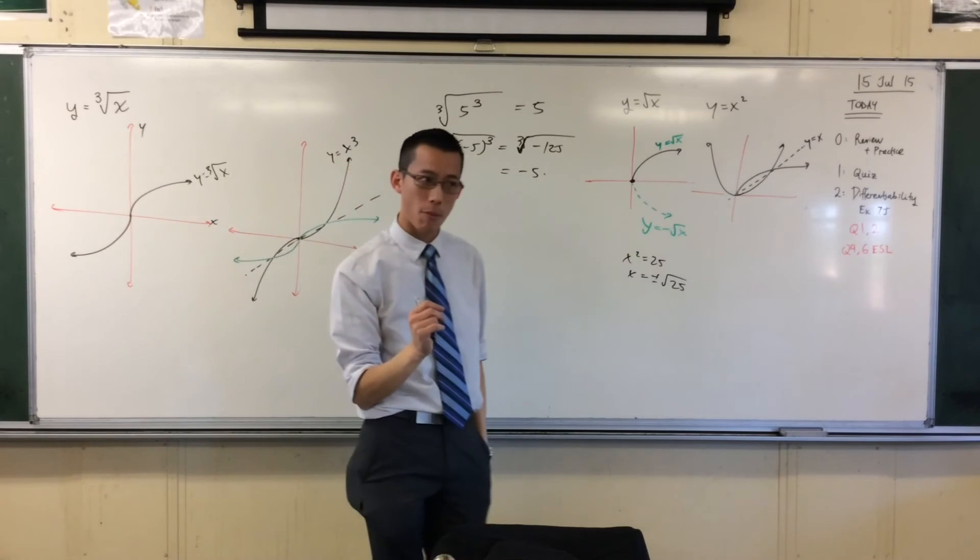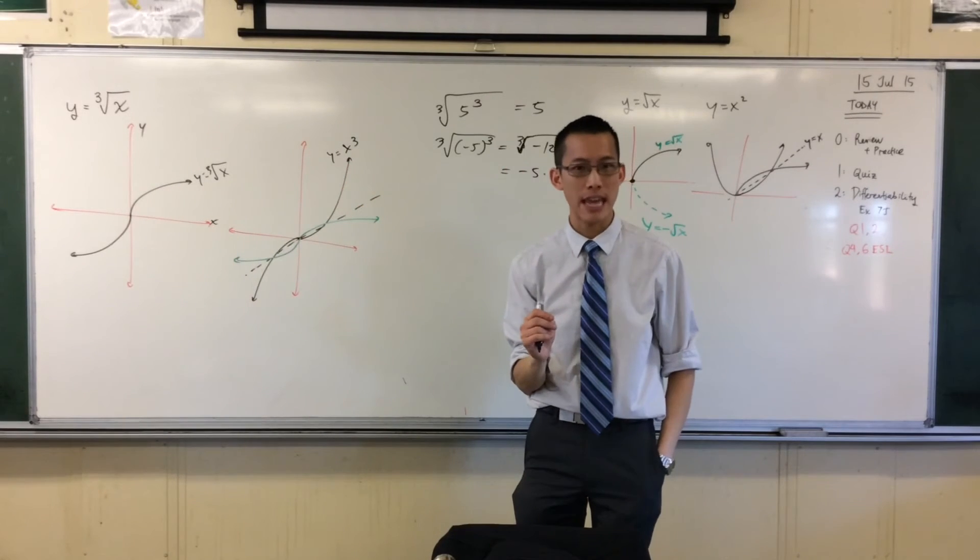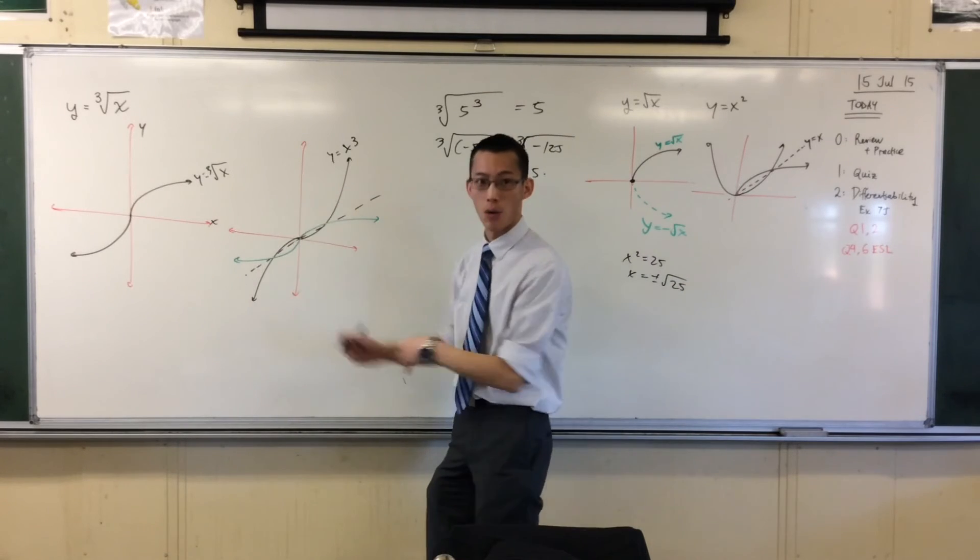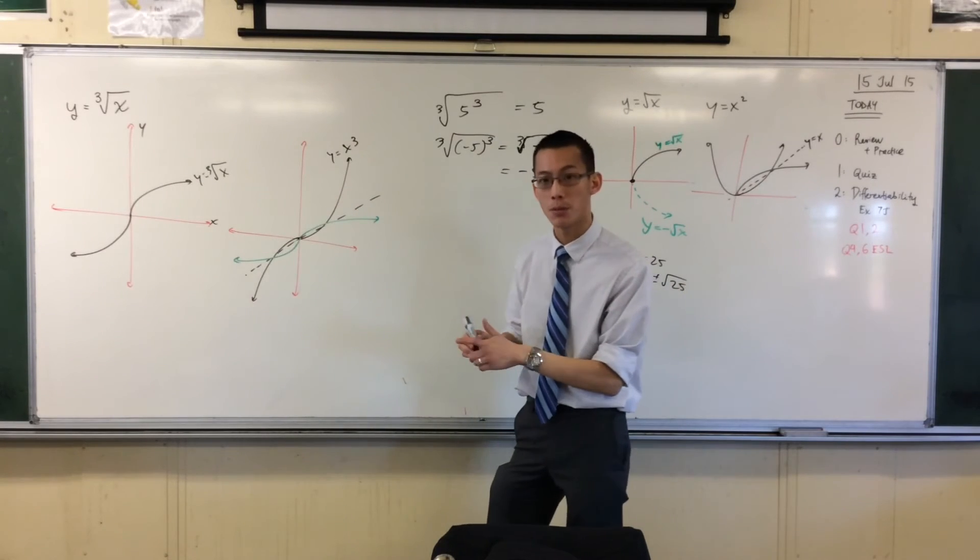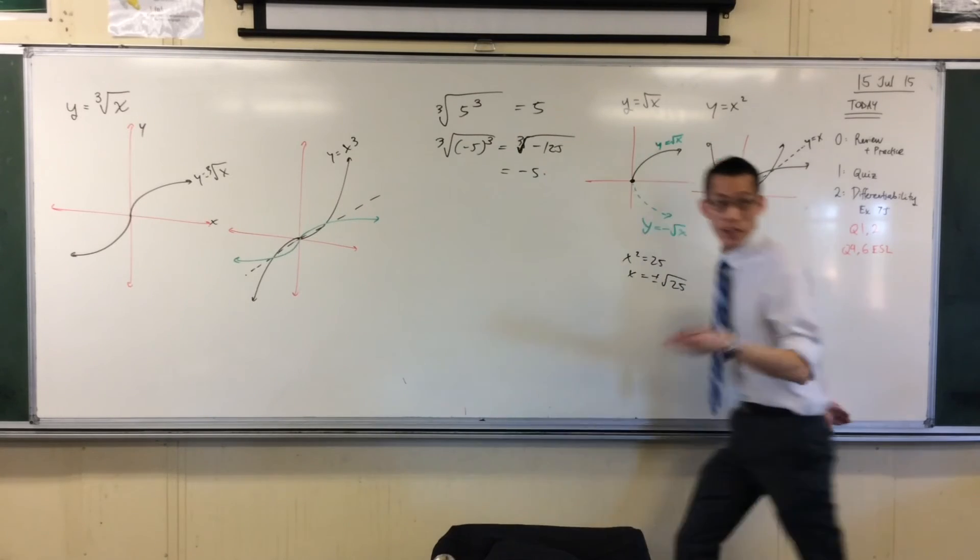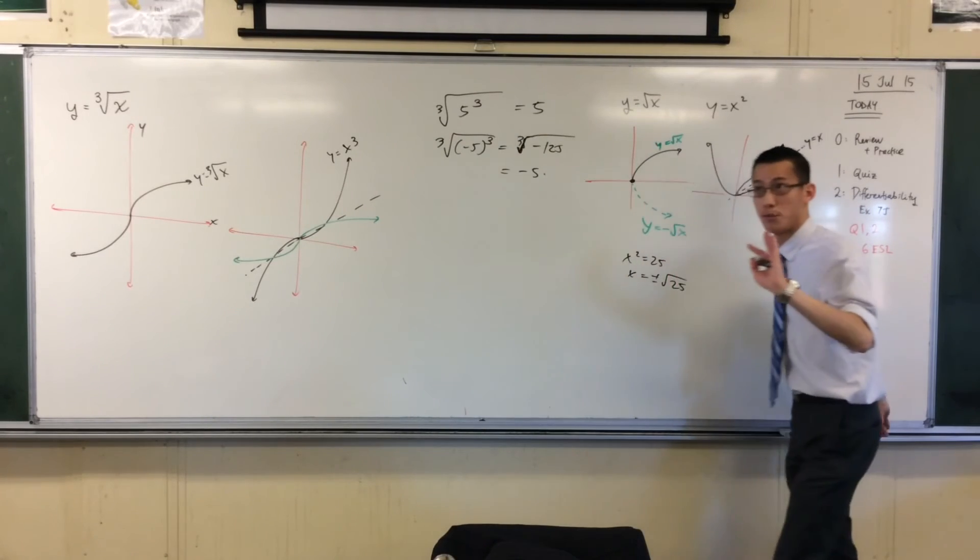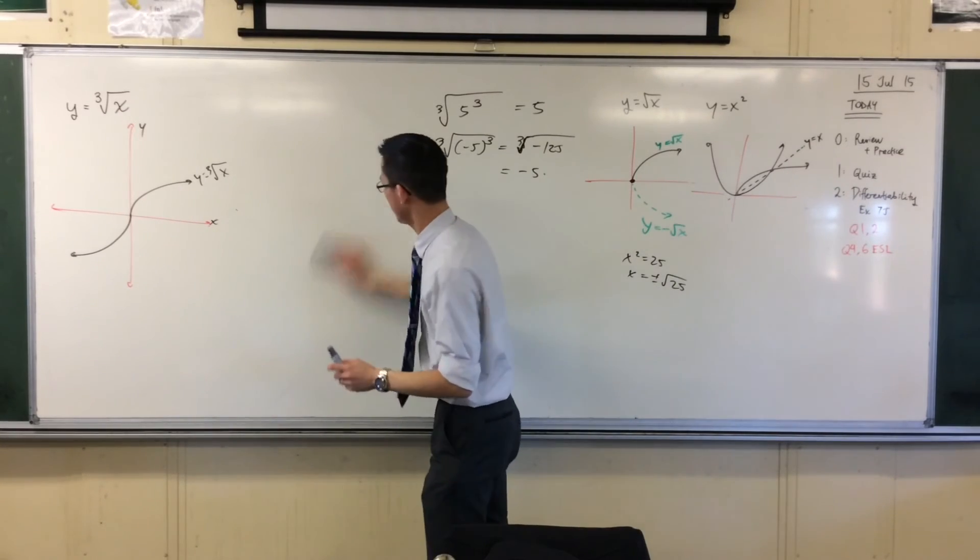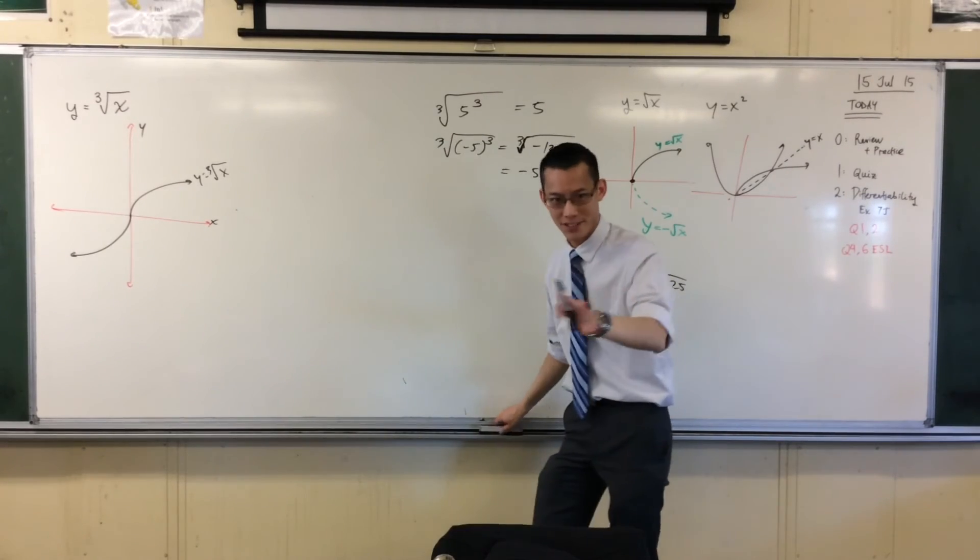What's our normal process? If I say I've got a curve, I want the equation of a tangent at a particular point, what would we do? We're going to need to differentiate and then do point gradient and get the equation of a line out. Let's give it a shot. Let's see what happens.